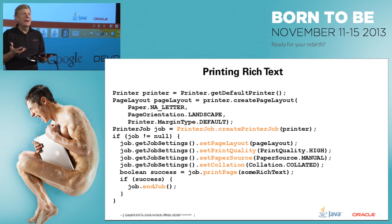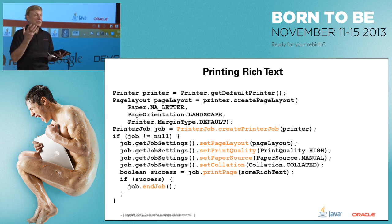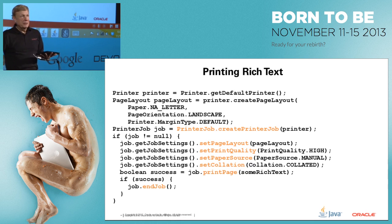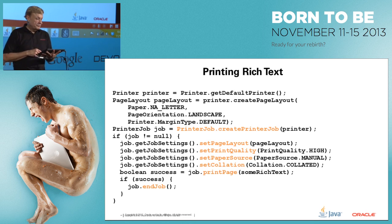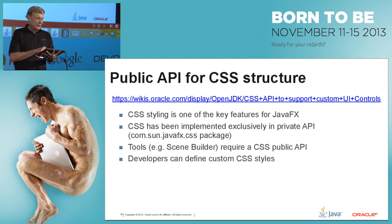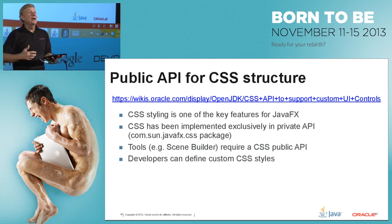There's also a printing API in JavaFX 8. You can either print the scene graph the user is looking at, or construct a separate scene graph specifically for the printer. Using the print API: create a PrintPageLayout, create a PrinterJob, configure settings, call printPage, and if successful, call endJob.